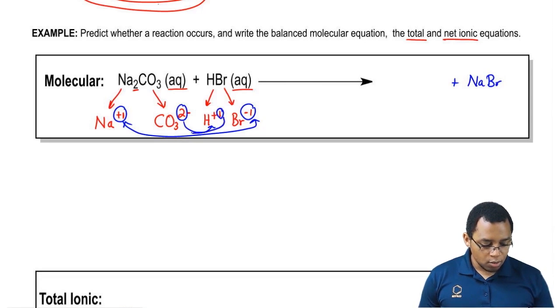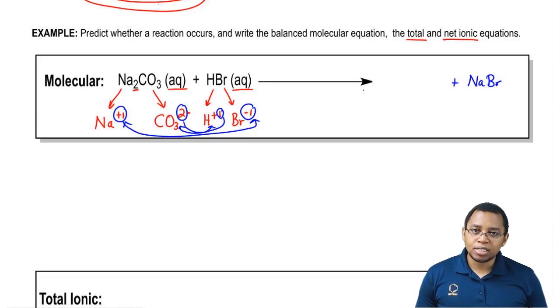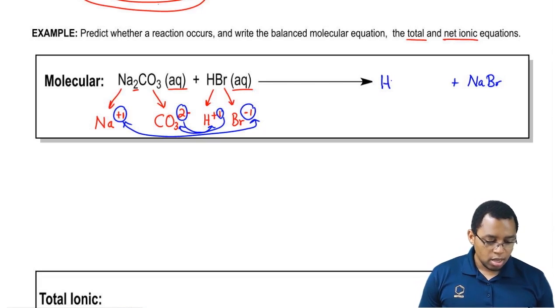Then we're going to say this 2 from the carbonate is going to move down here. This 1 over here is going to move over here. Since the hydrogen is the positive ion, it's listed first. So it's going to be H, and there's a little 2 there, CO3.